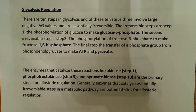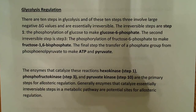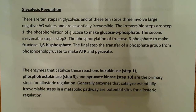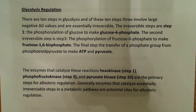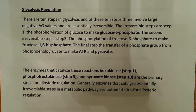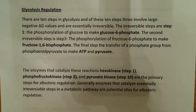The irreversible steps are step one, which is the phosphorylation of glucose to make glucose-6-phosphate. The second irreversible step is step three—the phosphorylation of fructose-6-phosphate to make fructose-1,6-bisphosphate. That's an essential molecule; it's the first unique product and has to go back through glycolysis. It's also the rate-limiting step. The final step is where we transfer a phosphate group from phosphoenolpyruvate to make ATP and pyruvate. That's also regulated and has a large negative delta G. So those are the three reactions: steps one, three, and ten.